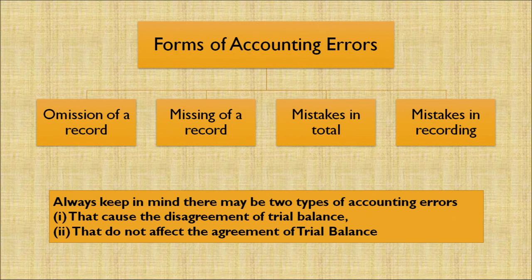There are four forms of accounting errors. First is omission of a record. Second is missing of a record. Third is mistakes in total. Fourth is mistakes in recording. Let's discuss each type of accounting error, starting with omission of a record.